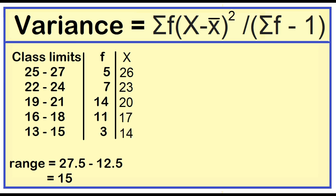Let's add another column for the product of the frequency and the class mark. 5 times 26 is equal to 130. 7 times 23 is 161. 14 times 20 is equal to 280. 11 times 17 is equal to 187. 3 times 14 is equal to 42.